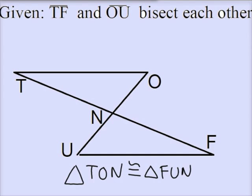So we want to first prove that TF and OU bisect each other. What does that mean? Well, this word bisect—bisect means cut in half. So TF and OU cut each other in half.